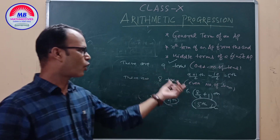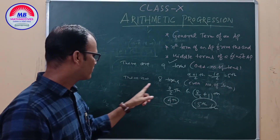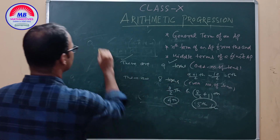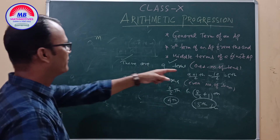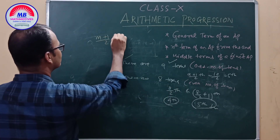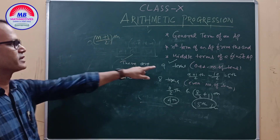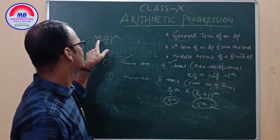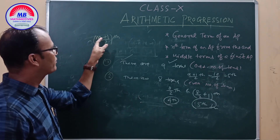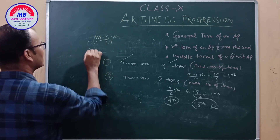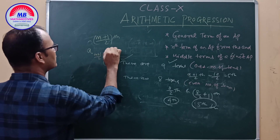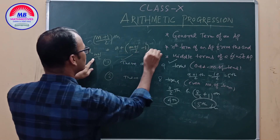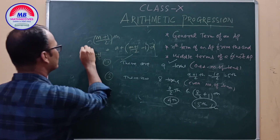If the total number of terms M is odd, the middle term is the (M + 1)/2 th term. The formula is a + ((M+1)/2 − 1) × d. For the second case, if M is even, we find two middle terms: the (M/2)th term and the (M/2 + 1)th term, using the formula a + (n − 1)d placing in the respective positions.